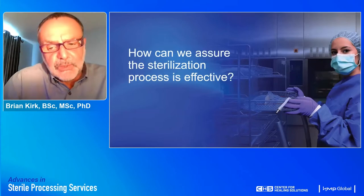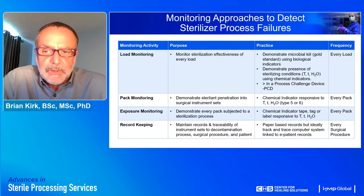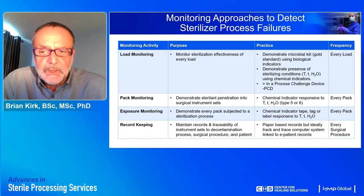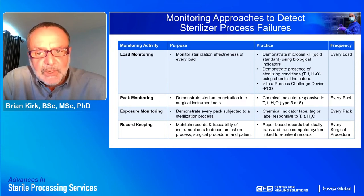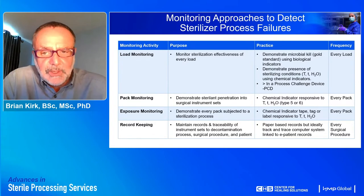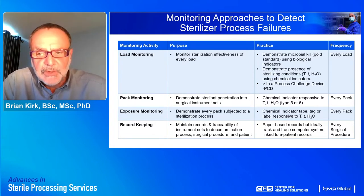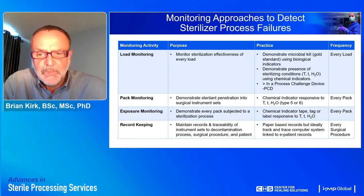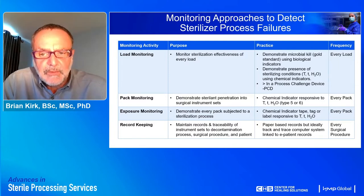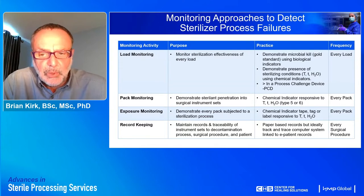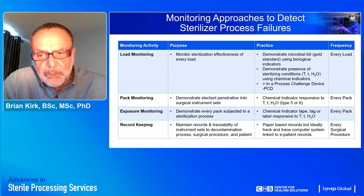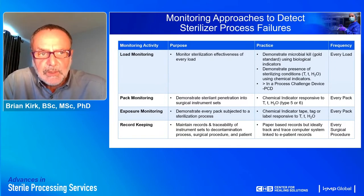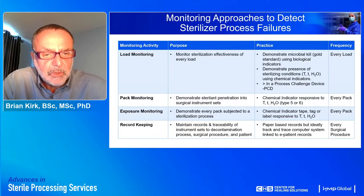To ensure the sterilization process is effective, a combination of actions should be used to detect possible process failures and provide evidence of an effective process. The first step is load monitoring, carried out using biological indicators — preferably enclosed within a process challenge device — along with examination of the process data produced by the sterilizer. Pack monitoring involves placing a chemical indicator in every pack, providing evidence that sterilant has actually penetrated through the packaging material to the point of placement. These indicators are particularly useful for operating room teams as evidence that a pack is suitable for use, and this is actually one of the requirements of the WHO surgical safety checklist.